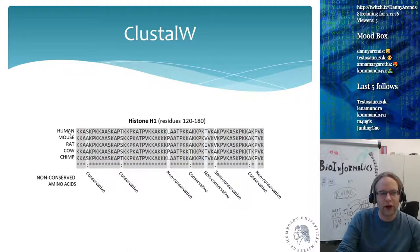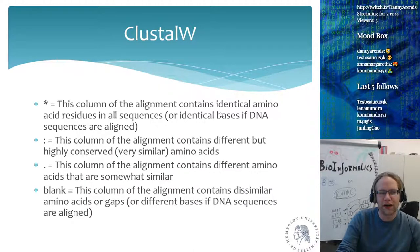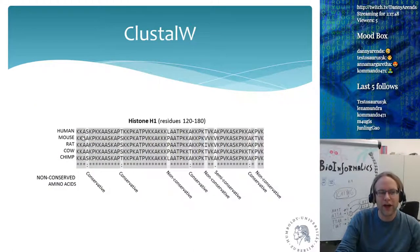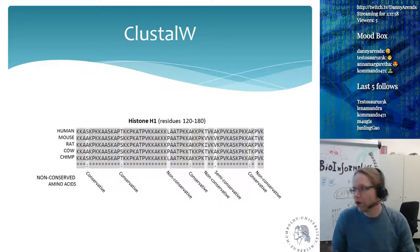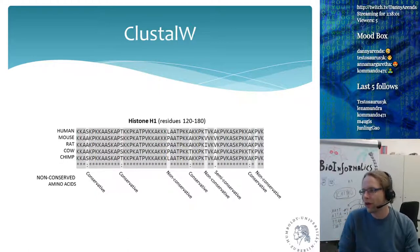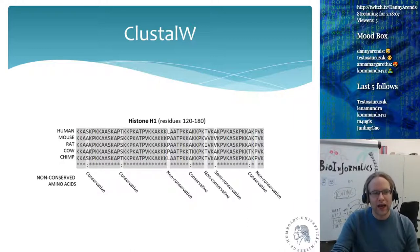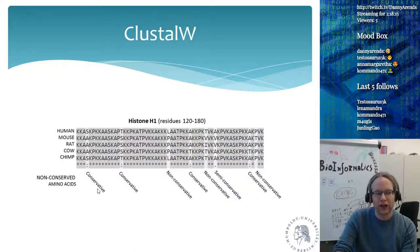For example, if you look at histone H1 and take mouse, human, rat, cow, and chimp, you would see a whole bunch of stars — those are identical positions. There's a high likelihood that the identical pieces are carrying some function, and without that function you cannot function as a histone. You also see colons where amino acids like S, A, A, A are very similar to each other and are deemed conserved.